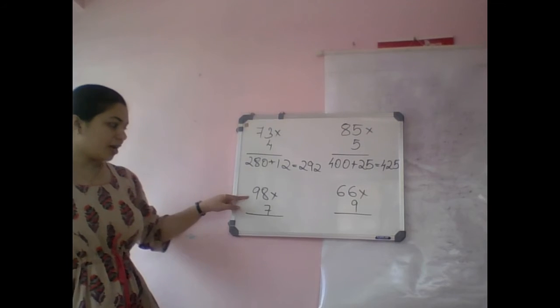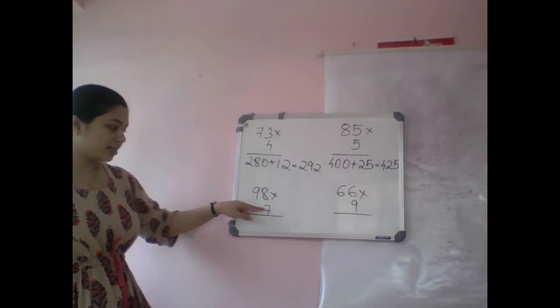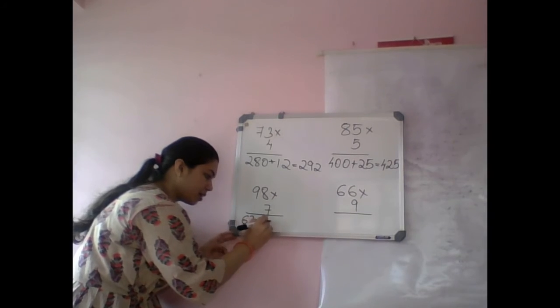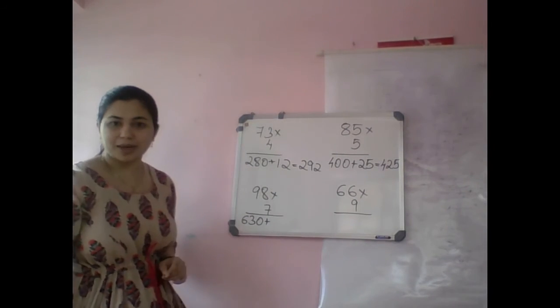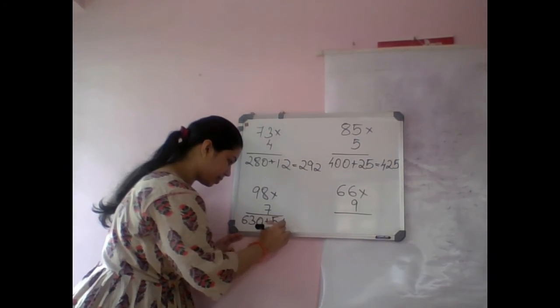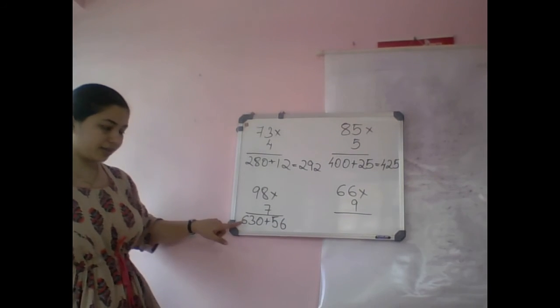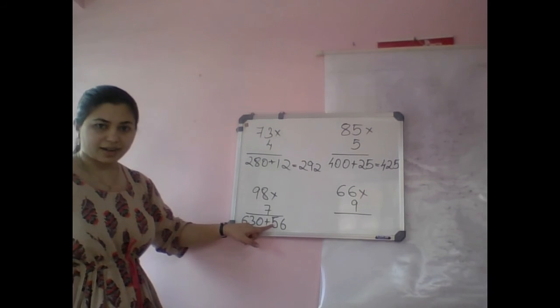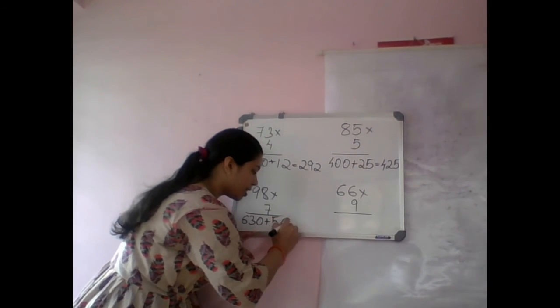Third, 98 into 7. 7 times 90, so 630, plus 7 times 8, 56. Again adding: 600, 630, 680, 686.